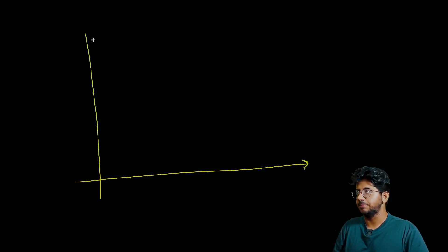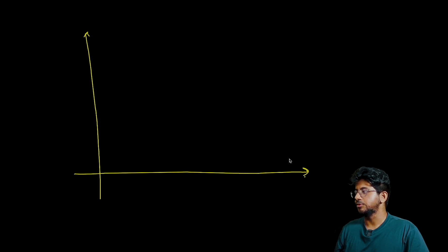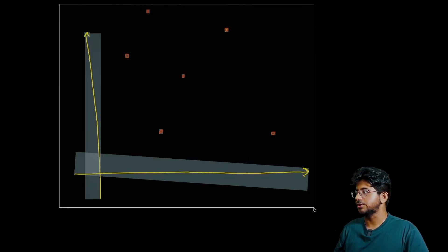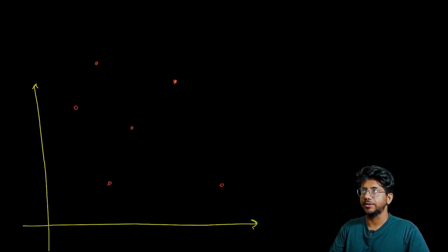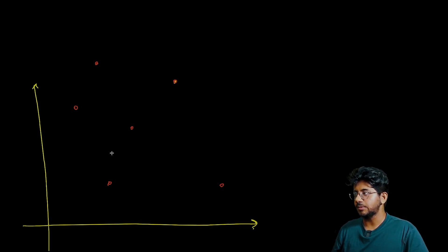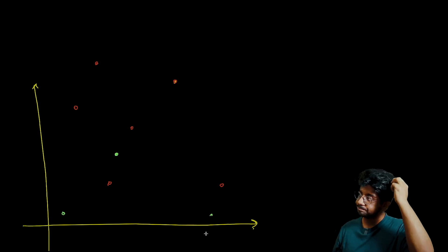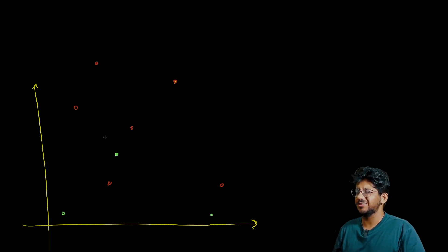Let's look at the setup in a bigger frame. You have a bunch of coordinate points on the plane — I'll draw them. These are the ai, bi points available on the plane, and I'll put some queries — let's say one query covers all points, another is somewhere in the middle, and another further away. These are the three queries for illustration — you can add more but this gives you the idea.